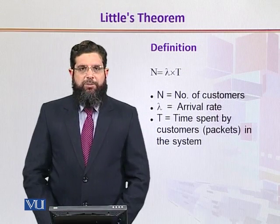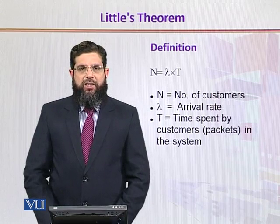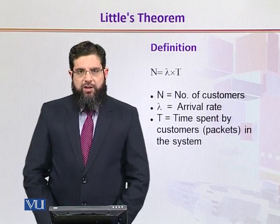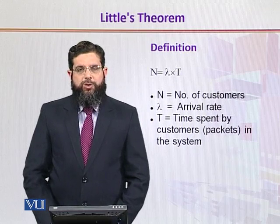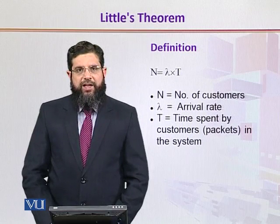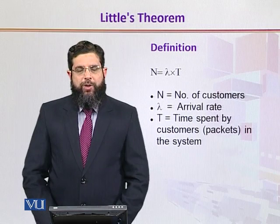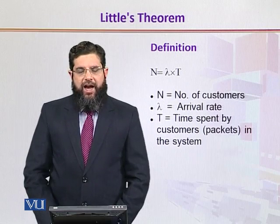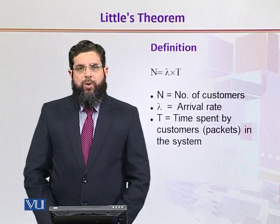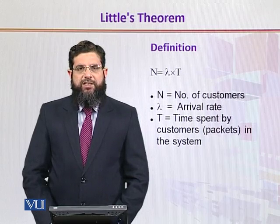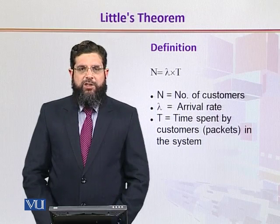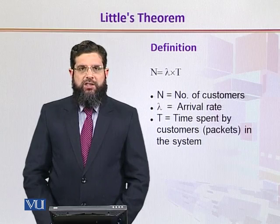As a simple mathematical expression, N is equal to lambda times T. This is Little's theorem, or Little's law. Here, N refers to the number of customers, lambda is the arrival rate or the speed at which customers or packets are arriving to the system under consideration, and T is the time spent by the customers or packets in the system. With this simple formula as the basis of Little's law, it provides an intuitive way to answer the two questions asked previously.